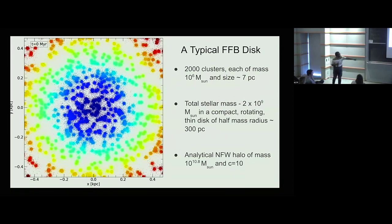The total stellar mass is about 2×10^9, in a radius with the half-mass radius of about 300 parsecs. Then we have an analytical NFW halo with integrated star formation efficiency of about 20%. So that's the initial setup, a typical FFB disk.